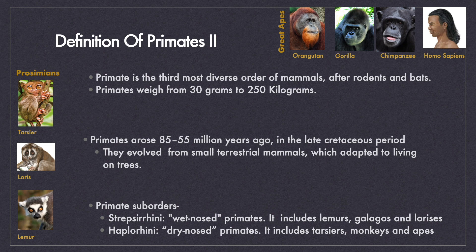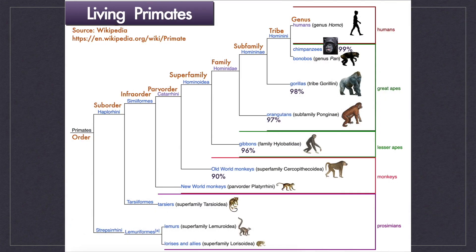In the top right corner you can see the images of great apes — humans, chimpanzees, gorillas, and orangutans. On the left-hand side you can see the images of prosimians — tarsiers, lorises, and lemurs. In this slide, all the major living primates and their position in the order primate is shown. You can see the humans, the great apes, the lesser apes, the monkeys, and the prosimians.